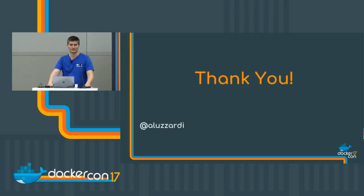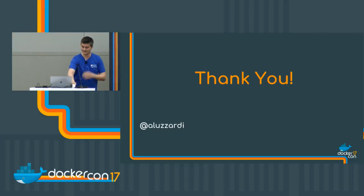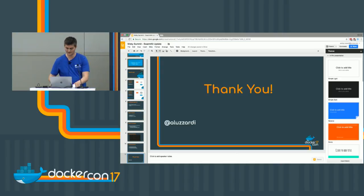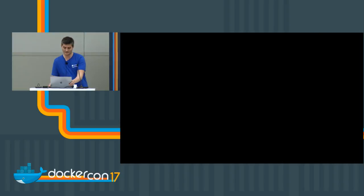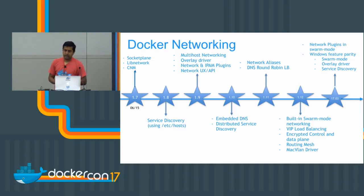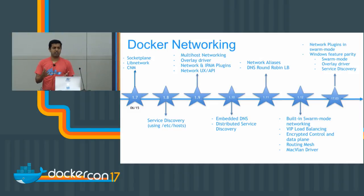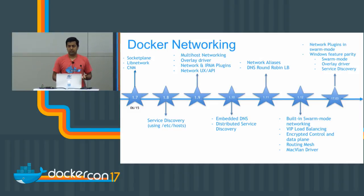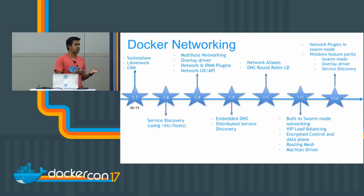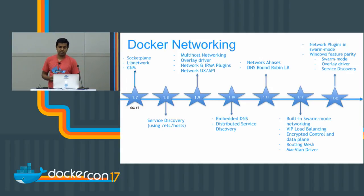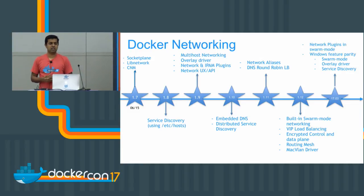That's it for SwarmKit — I'll let Madhu continue on networking. During the Berlin summit we discussed 1.12 features we implemented. We then had the 17.03 and 17.04 releases. We were concentrating on stability of the routing mesh in 17.03, which got much better. We also introduced network plugins in swarm mode, which started working in 17.03. And most importantly, we had the Windows feature priority — in 17.03 we got most of the swarm mode functionality that was missing in Windows added.